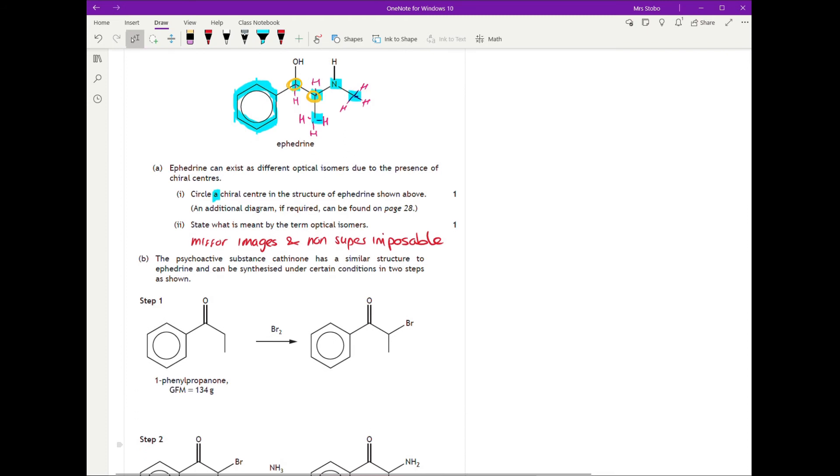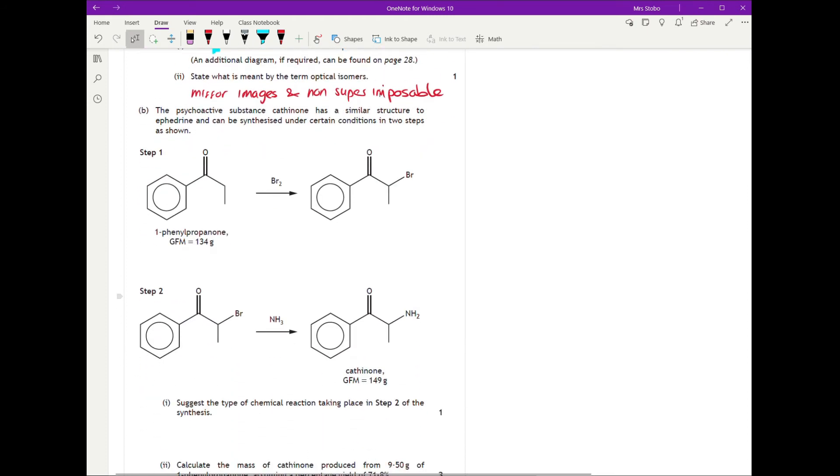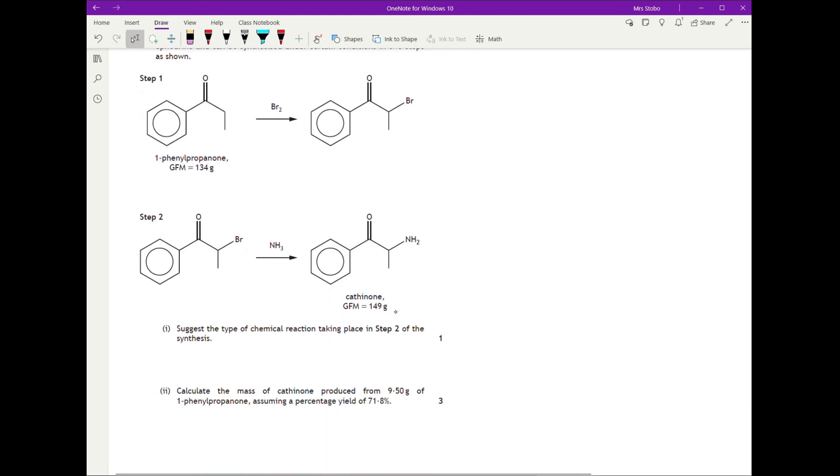The psychoactive substance cathinone has a similar structure to ephedrine and can be synthesized under certain conditions in two steps. We have step one, step two. Suggest the type of chemical reaction taking place in step two of this synthesis. So step two, have a look at what's changed. We have, here's a bromine and now we have an amine group and that was what we brought in. We've swapped one thing for another. Substitution is what I was trying to write there. So substitution reaction.